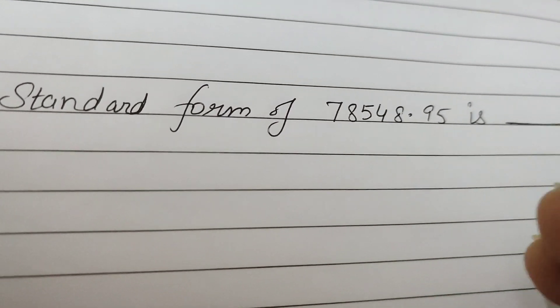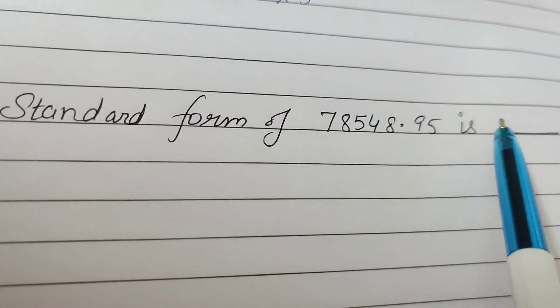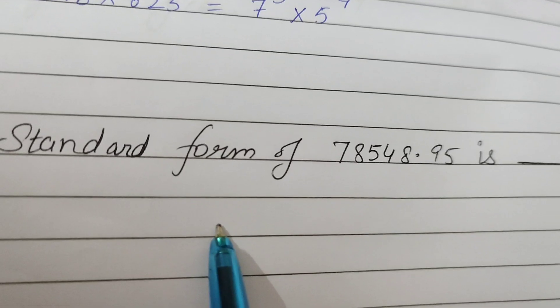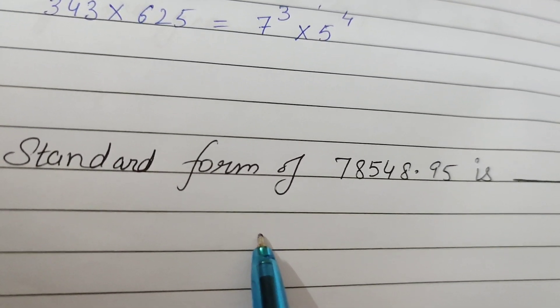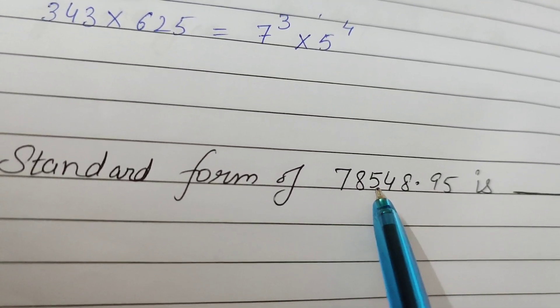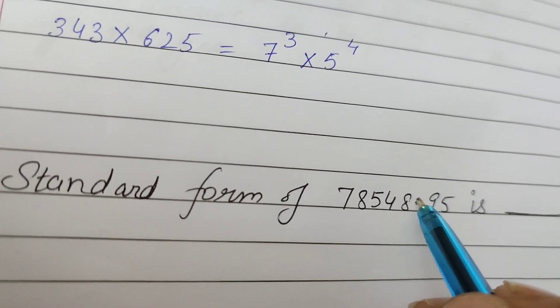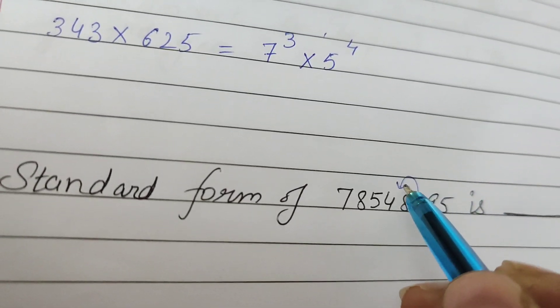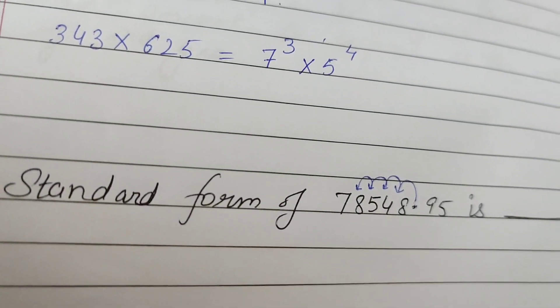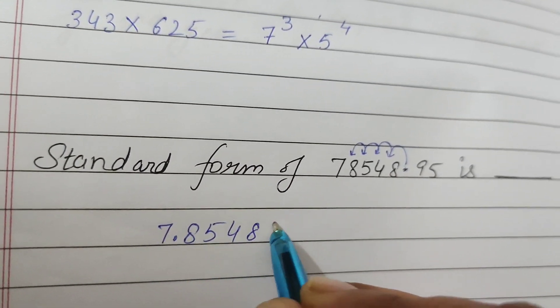Next is standard form of 78548.95. Standard form ke liye kya chahiye, the number should lie between 0 and 10. 10 se chhota hona chahiye and multiply by 10 raise to the power. Here decimal is at the end, so we need to move the decimal to the left side. Kitni baar move karna padega, 1, 2, 3, 4. Four times. It means this number will come out to be 7.854895.